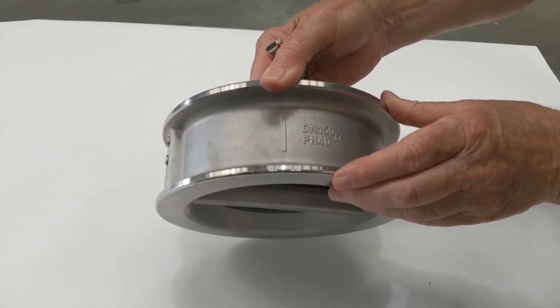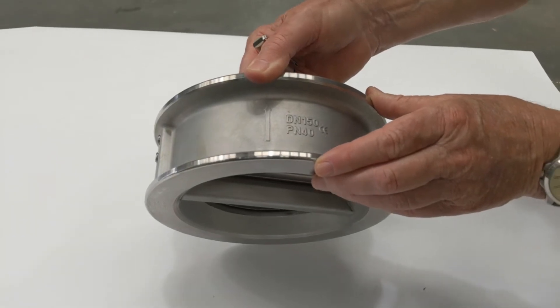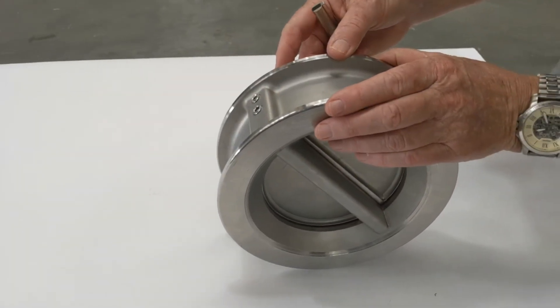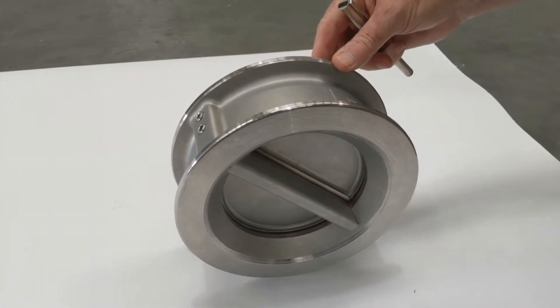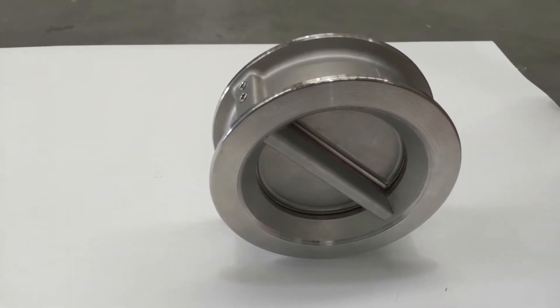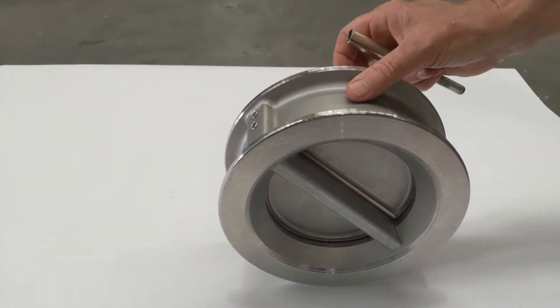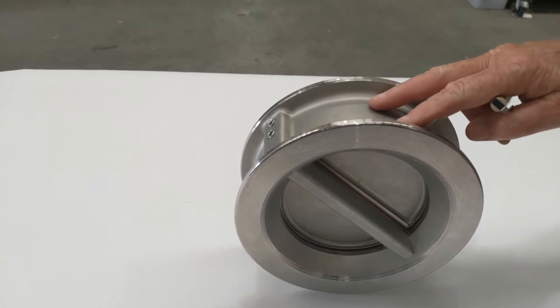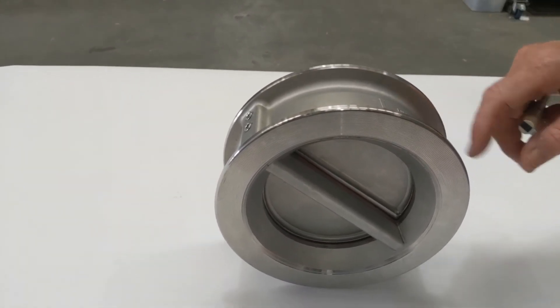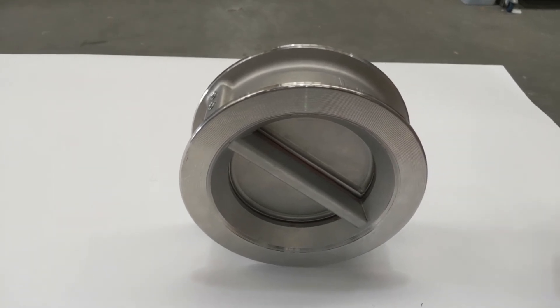What's the body constructed of? Body is investment cast 316 stainless steel with the Zycon stainless steel, the powder for the high finish of the investment casting using the straightened Zycon powder.